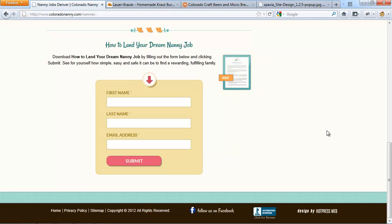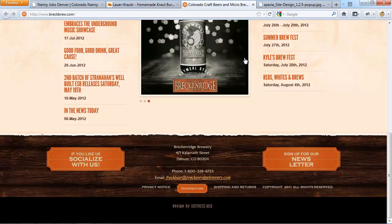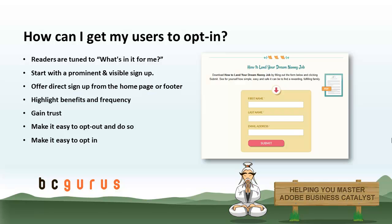Start with a prominent and visible sign-up. Offer direct sign-up from the homepage or footer. Highlight benefits and frequency — describe what users will get and how often. Sites sometimes offer incentives; common incentives are discounts and freebies. Gain trust: promise not to sell, spam, or share. Link to the privacy policy and make it easy to opt-out. On the other hand, make it easy to opt-in. Ask only what is really needed — name and email address is common, but often only the email address is sufficient.